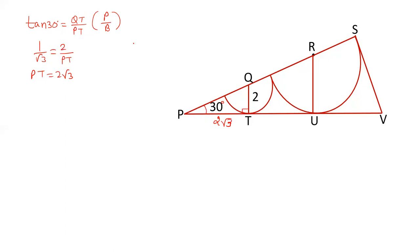Now we apply sin theta here. Sin 30, that is opposite side upon hypotenuse, QT upon PQ. Sin 30 is 1 by 2. QT is 2. PQ we can calculate which will be equal to 2 into 2, so the length of PQ is 4.